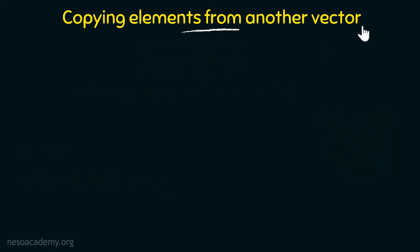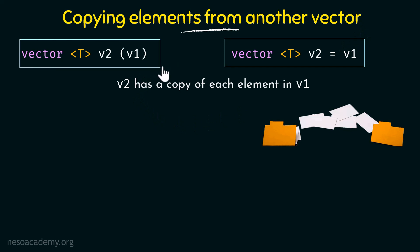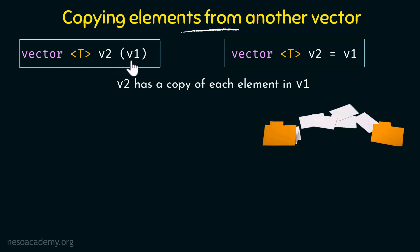Next we have copying elements from another vector. This is another way of defining and initializing a vector — by copying the value of one vector to another. Here we have vector and the type specified within angle brackets, then the name of the vector, and within parentheses we specify the name of the vector from which we are copying the elements. So vector v2 would contain all the elements which are in vector v1.